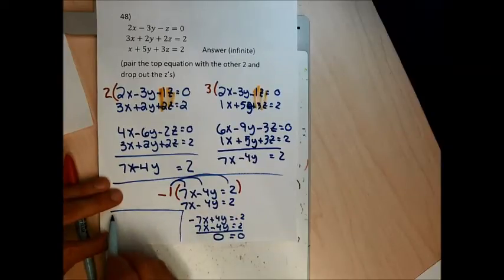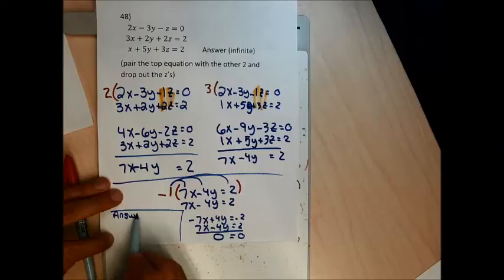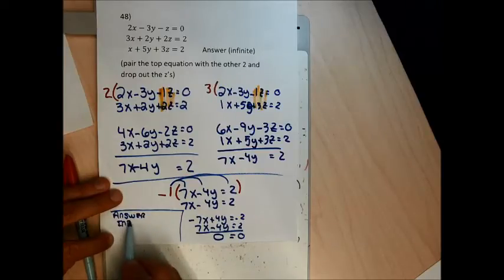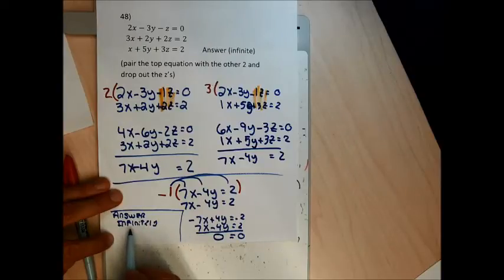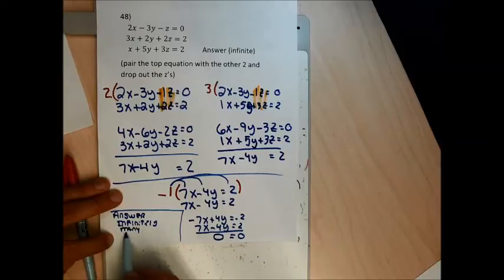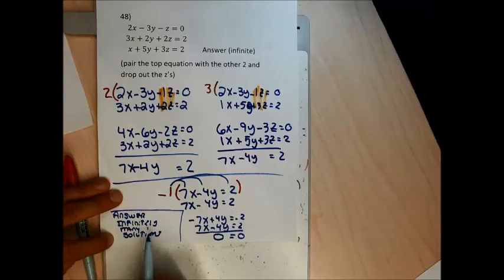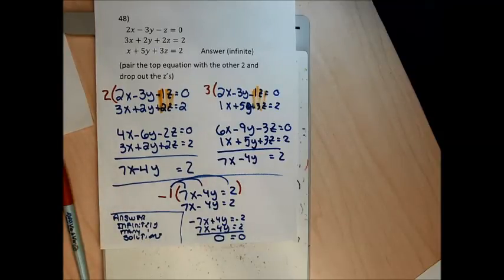Stacking 7x minus 4y equals 2 on top of 7x minus 4y equals 2, I multiply the top by negative 1 and add to the bottom: all letters drop out and I get 0 equals 0. That's a true statement. When letters drop out and a true statement remains, the answer is infinitely many solutions. There's an elegant way to write this, shown in the solutions manual, but you're not responsible for it.